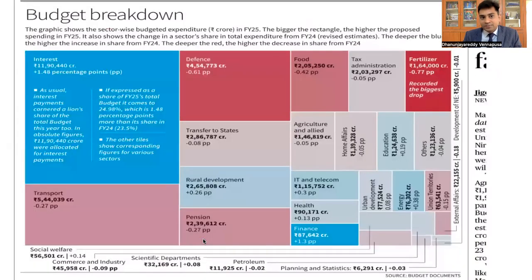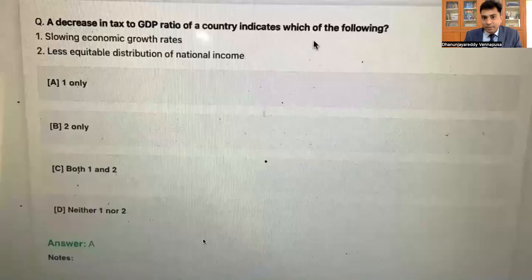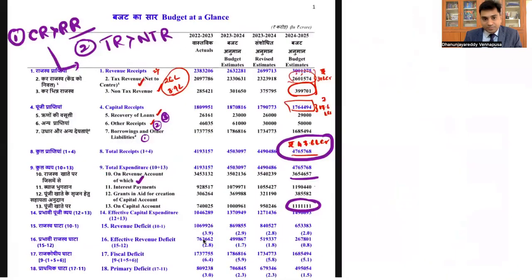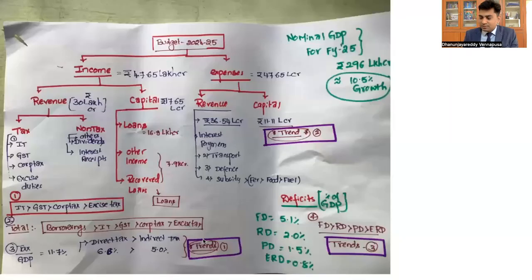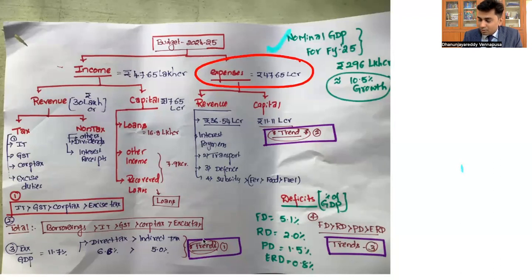This budget breakdown shows that major revenue expense is going for interest payments, followed by transport, followed by defense — these are the three things followed by subsidies. Budget at a glance is nothing but this. So what you have to remember: total budget expense is 47.65 lakh crores. Revenue expense is 36 lakh crores and capital expense is 11.11 lakh crores. If you remember 47.65 and 11.11, you can derive revenue from there.